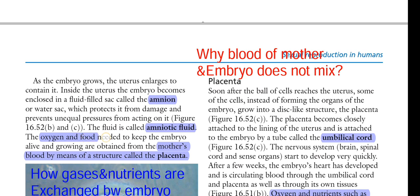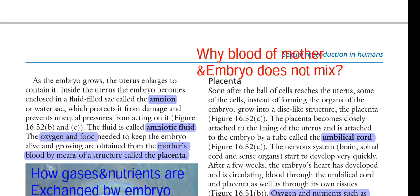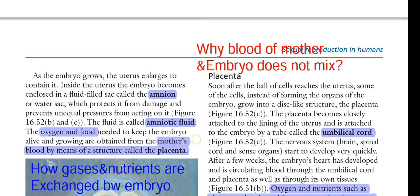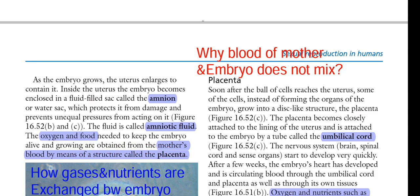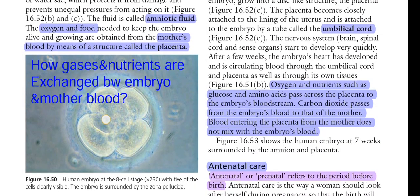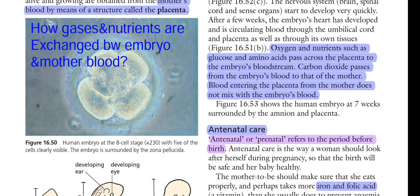Oxygen and food needed to keep the embryo alive and growing are obtained from the mother's body by means of a structure called the placenta. The endometrium of the pregnant woman's uterus is called the decidua, and the part of the decidua to which the embryo is attached is called the decidua basalis.